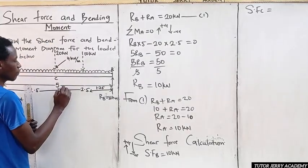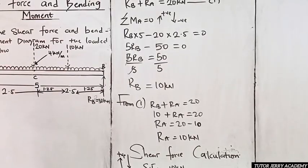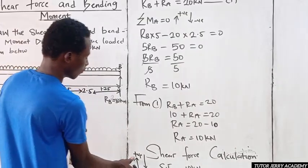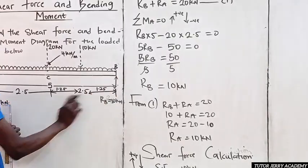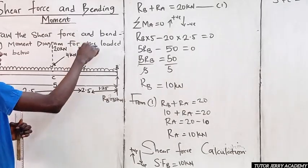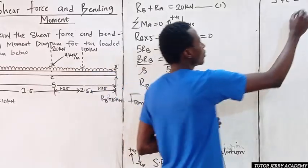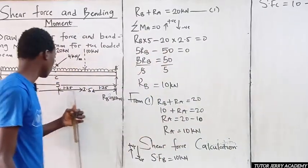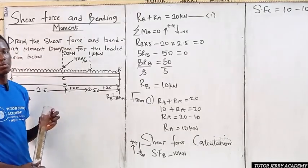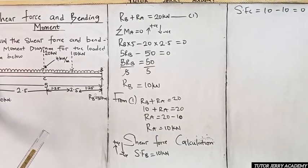So the shear force at C equals 10 (upward, positive) minus 10 (downward) which equals zero. Since the shear force at C is zero, it means the bending moment will be maximum at point C.